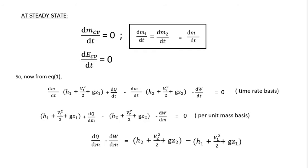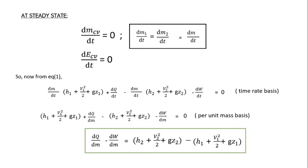After solving, we get the per unit mass steady flow energy equation: dQ/dm − dW/dm = (h₂ + V₂²/2 + gz₂) − (h₁ + V₁²/2 + gz₁). This is the Steady Flow Energy Equation (SFEE), which applies at steady state conditions.